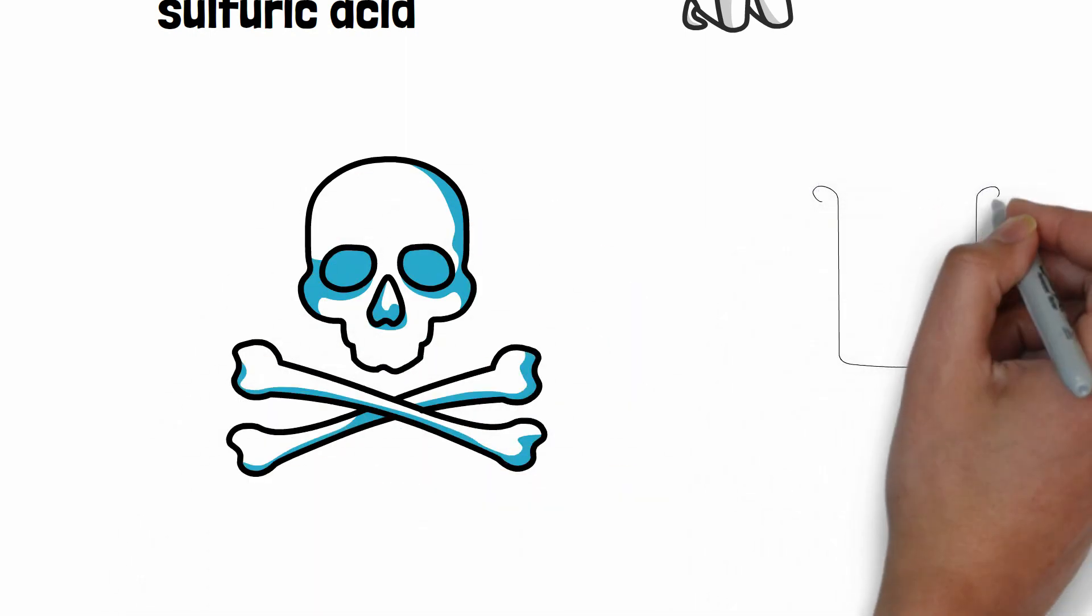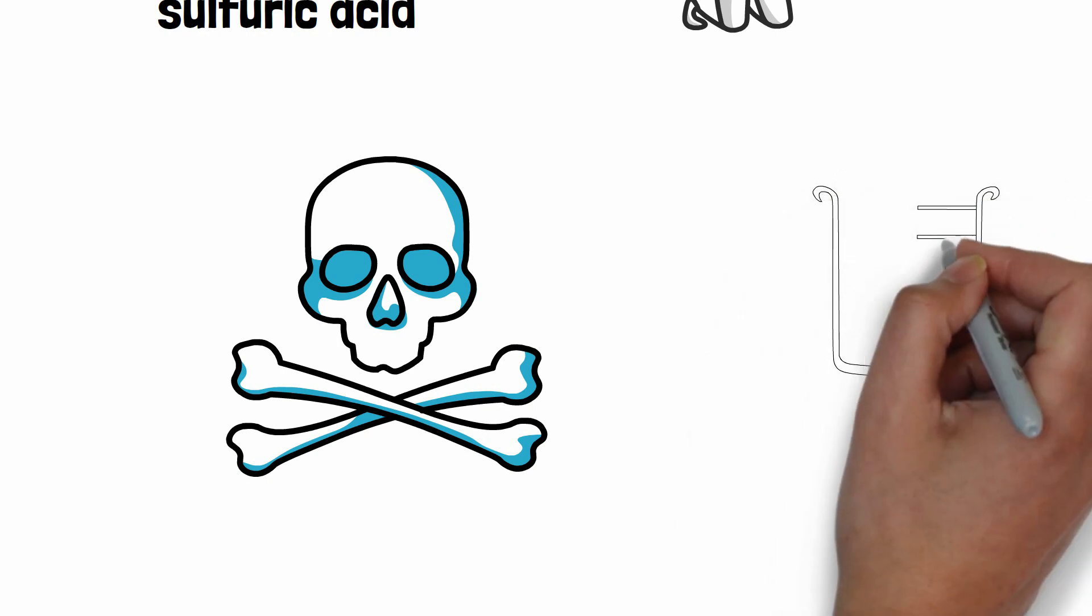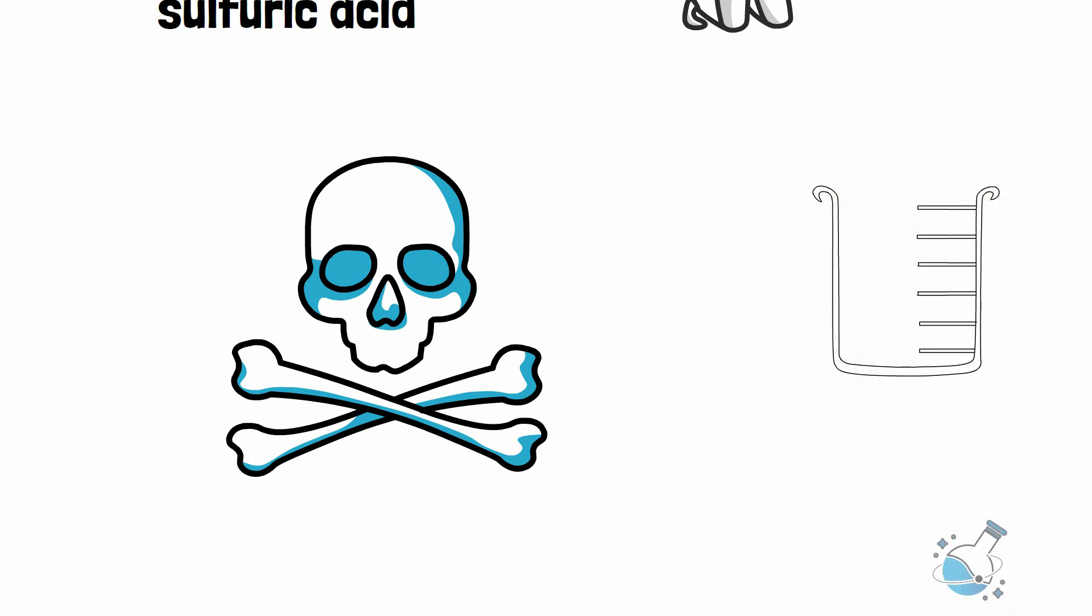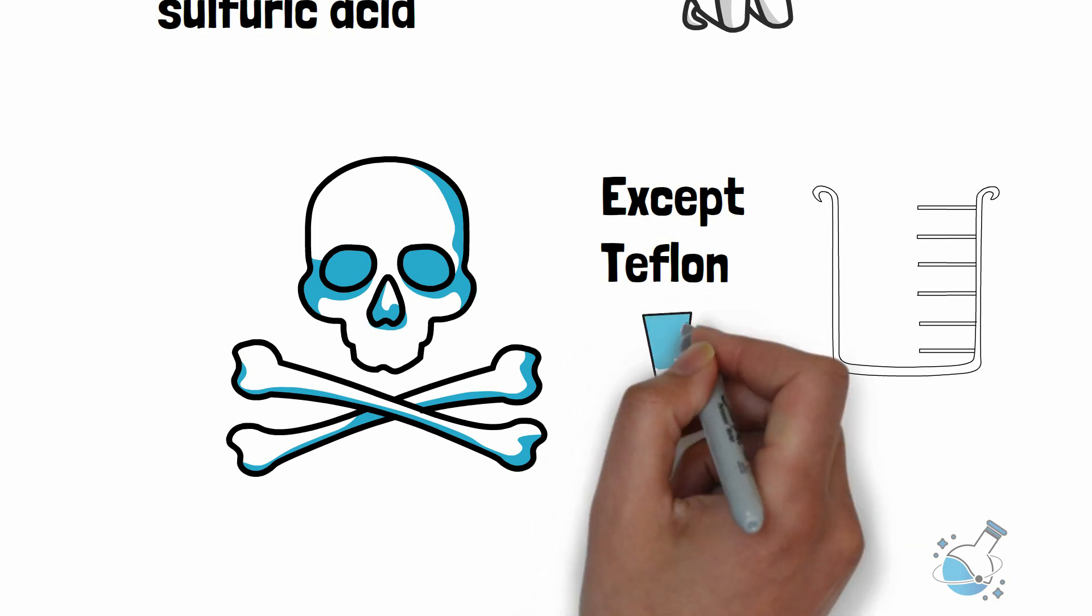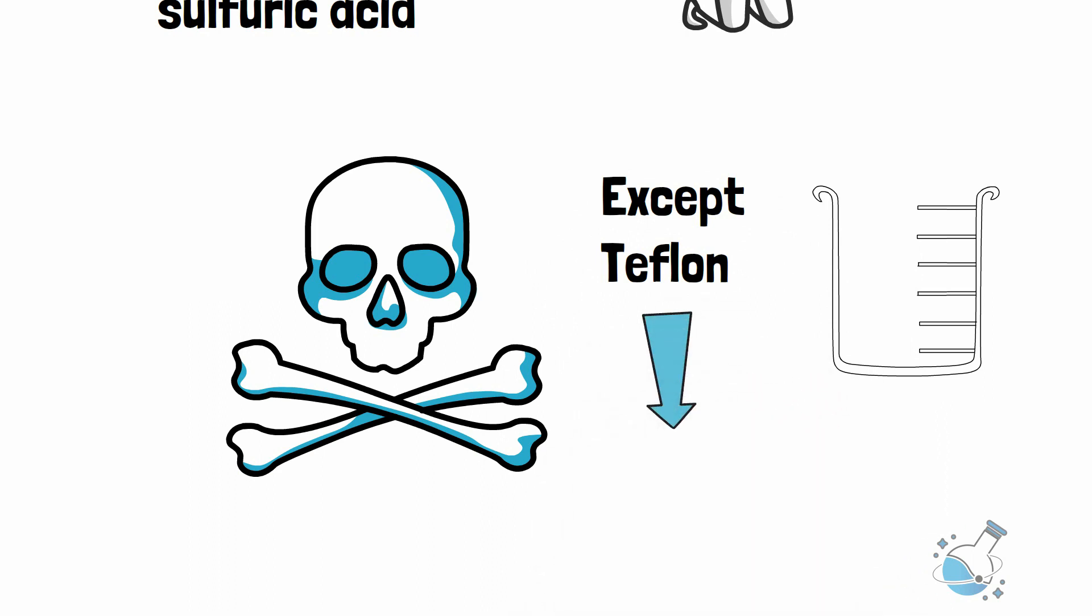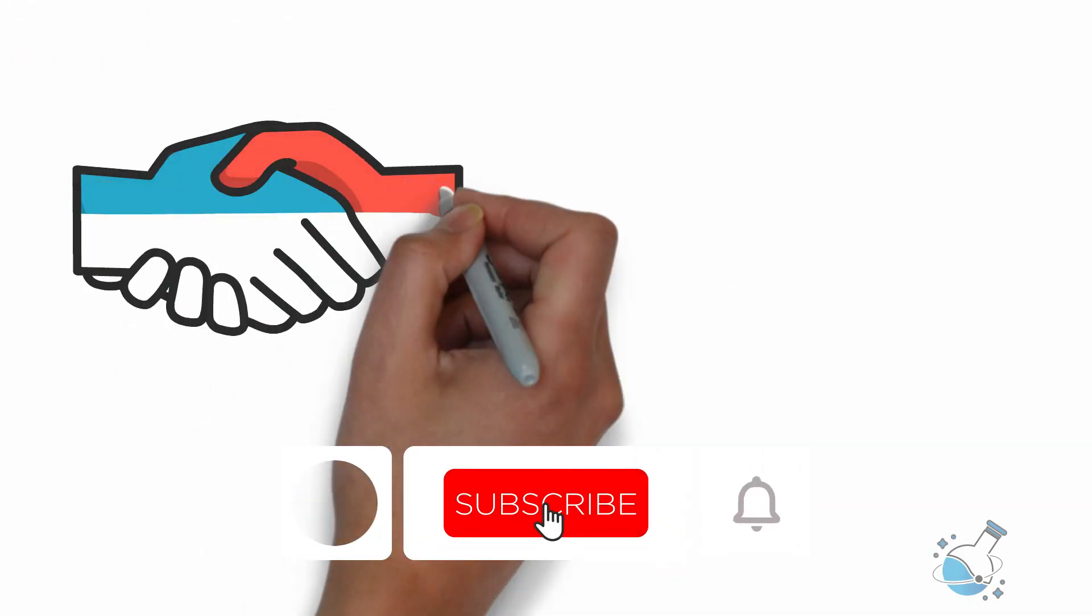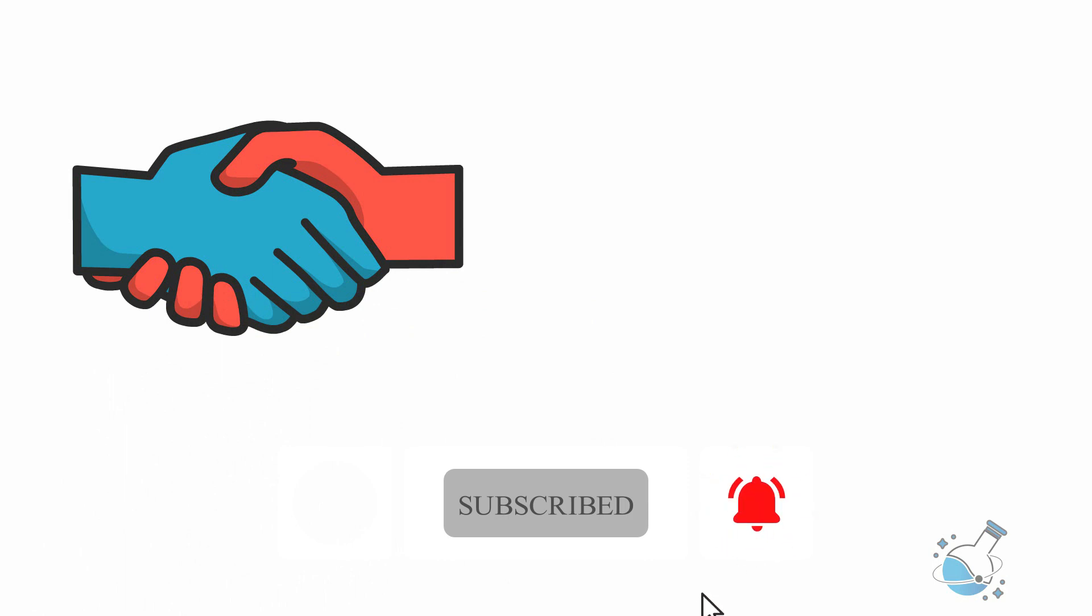No matter what container you put it in, you will melt that and keep marching ahead, except the container is made out of Teflon. And so, it is used to produce the container for fluoroantimonic acid, the very material used in your frying pan. If you want to thank me for delivering this good news, then please subscribe to our channel. So, why Teflon?